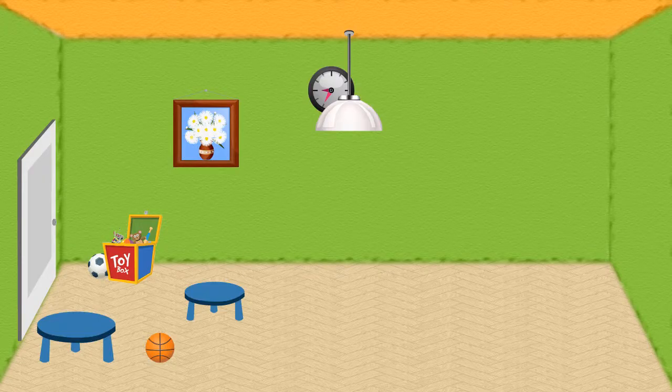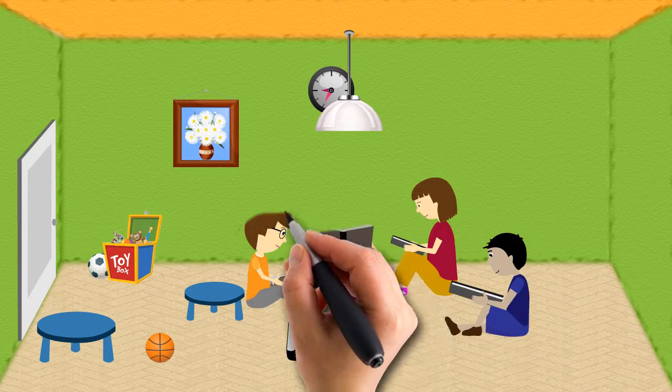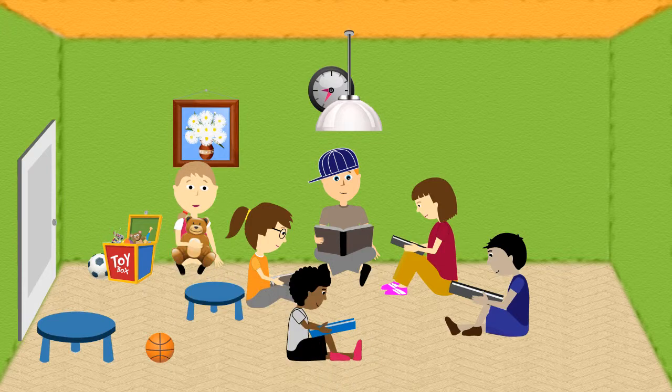A shelter is a safe place. In the shelter, there are distractions for the children to get away from the danger outside. Some children read books or tell stories. Others hold their stuffed animals for comfort.